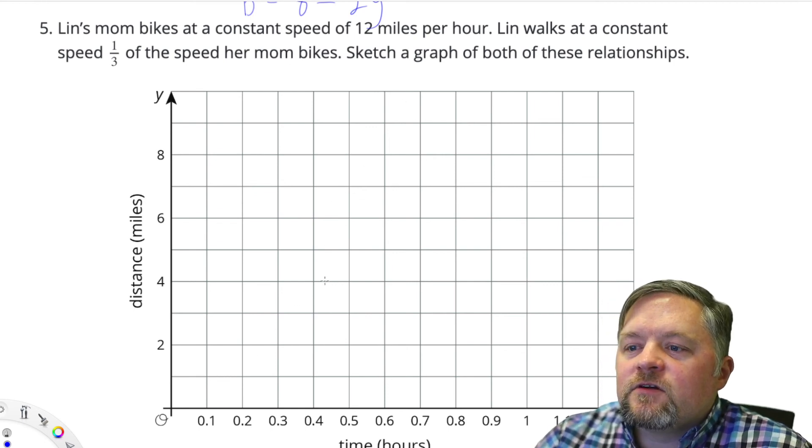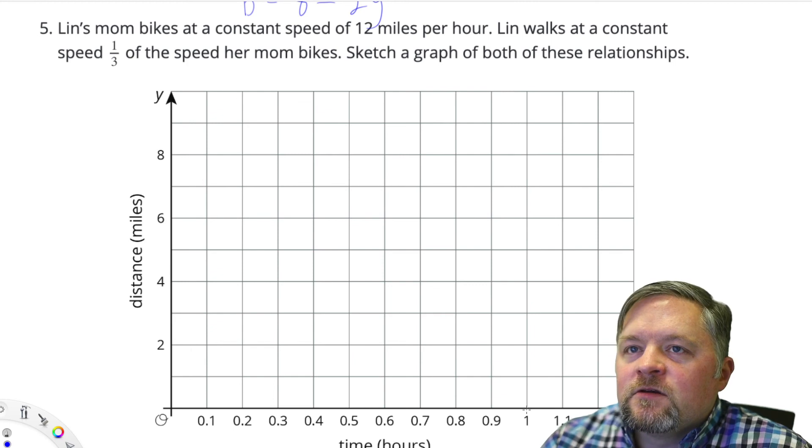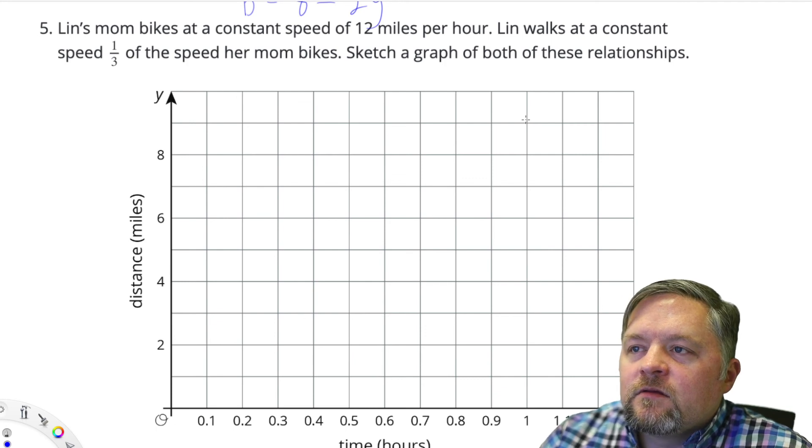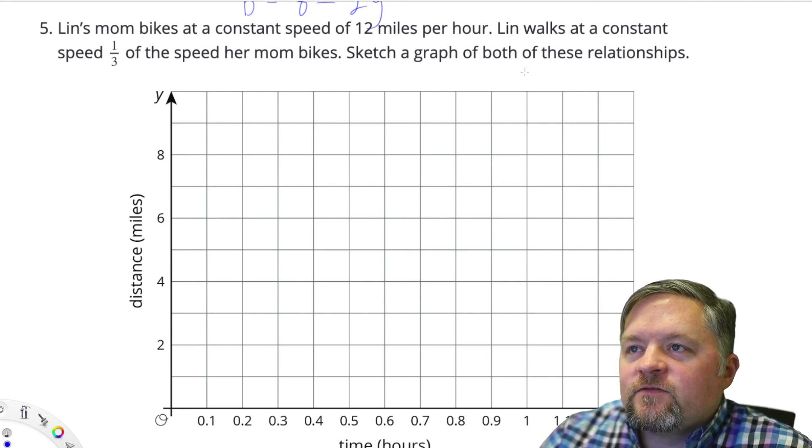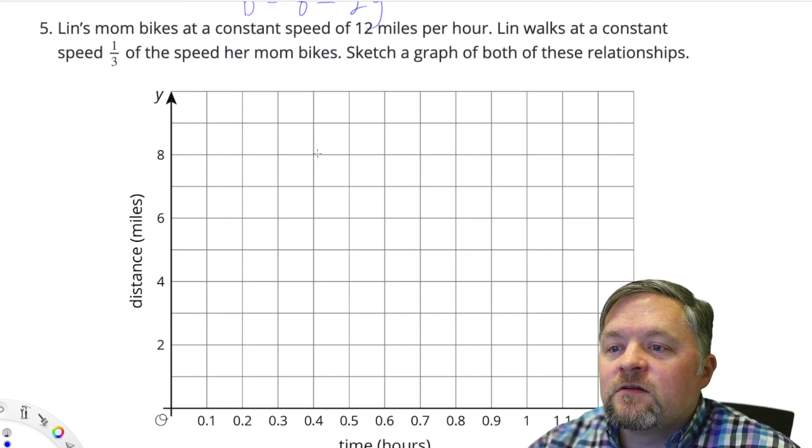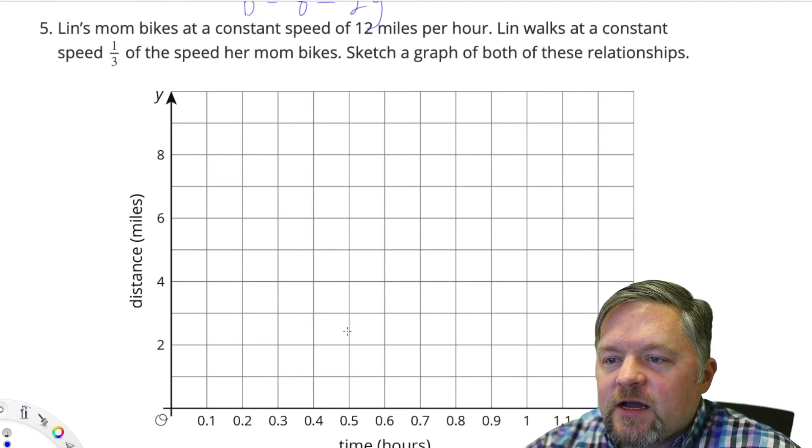So Lynn's mom goes 12 miles per hour, so in one hour... there's just not really enough time for that. But 12 miles in one hour means 6 miles in half an hour.